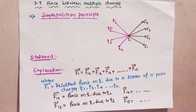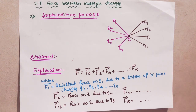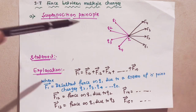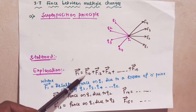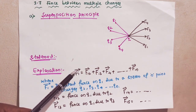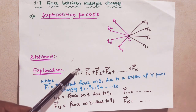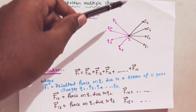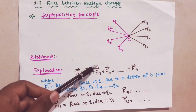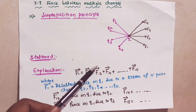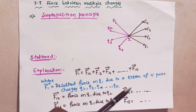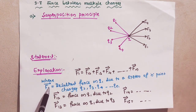The principle says when a number of charges are interacting, the total force on the given charge q1 is equal to the vector sum of the forces acting on it. The net force on charge q1 is equal to the vector sum of forces f1, f2, f3, f4, that is vector f12 plus vector f13 plus vector f14, and so on up to vector f1n.